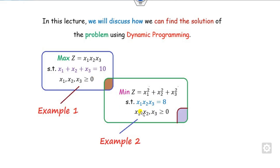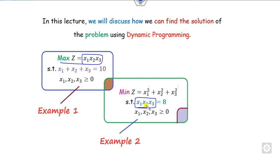The objective of the first problem is maximization, where the objective involves a multiply sign. In the second example, it is a minimization problem, while the constraints are of the product sign. We will discuss how to solve such problems in a very efficient manner.